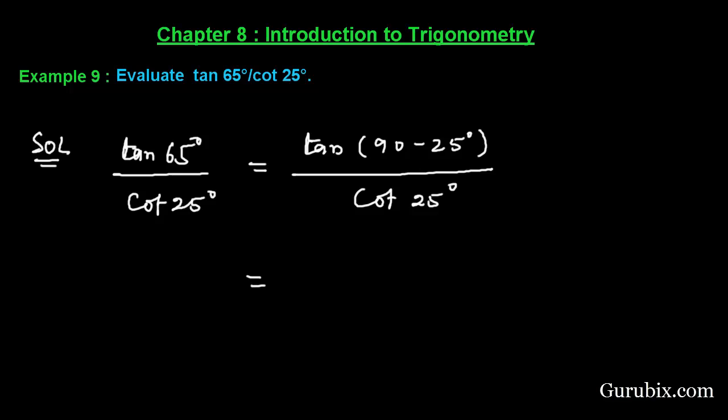And now we shall apply the formula that is tan 90 degree minus theta equals cot theta. Therefore this tan 90 minus 25 degree will be cot 25 degree.